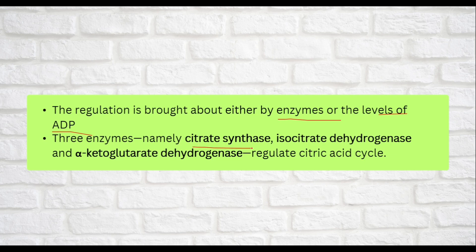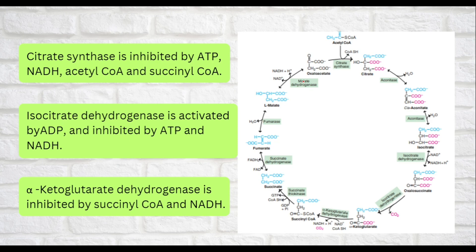We will discuss the regulation of the citric acid cycle. We have three key regulatory enzymes: citrate synthase, isocitrate dehydrogenase, and alpha-ketoglutarate dehydrogenase. We will regulate these three enzymes in the citric acid cycle.